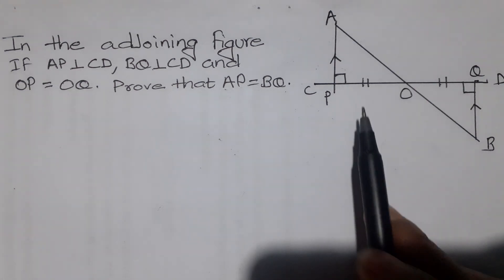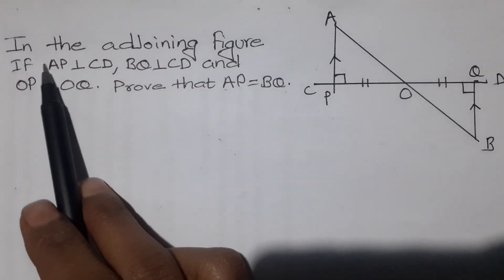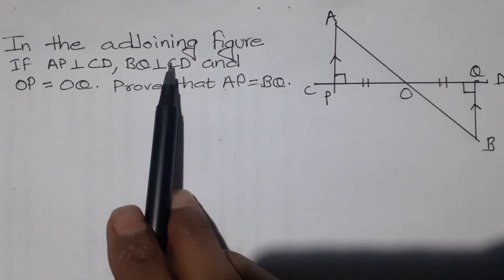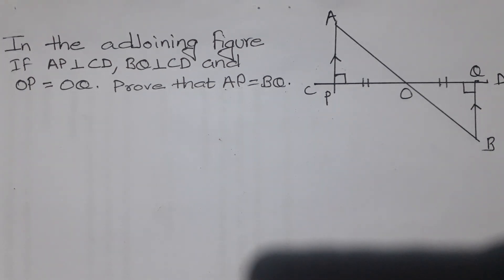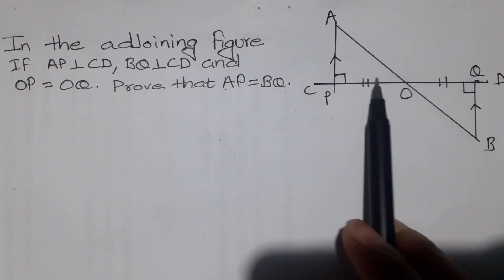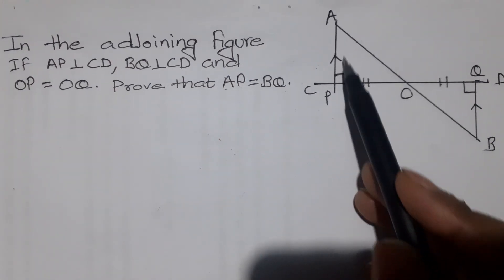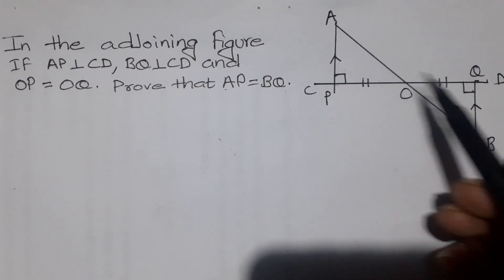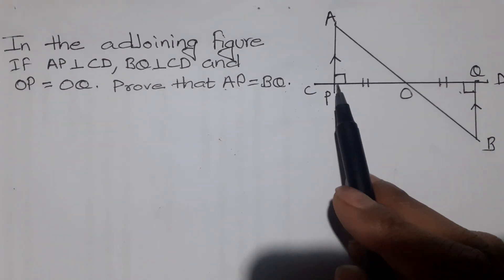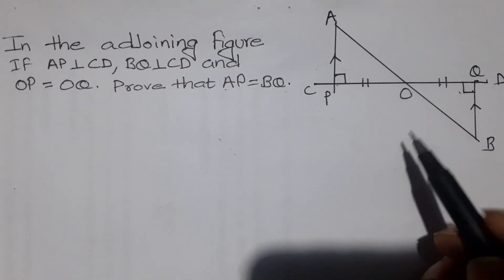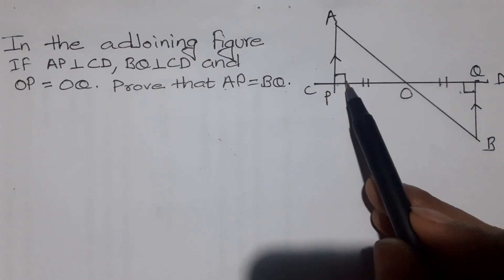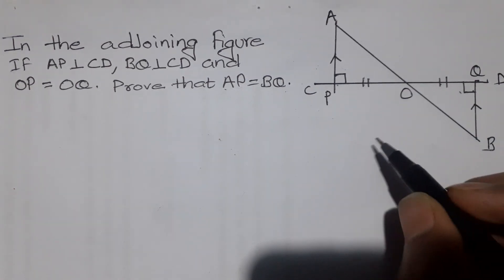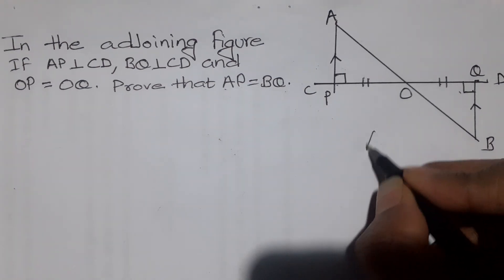If you look at the question, AP is perpendicular to CD and BQ is perpendicular to CD, and OP is equal to OQ. Also, perpendicular means 90 degrees — this symbol indicates 90 degrees. So we can use the RHS congruence criterion here.